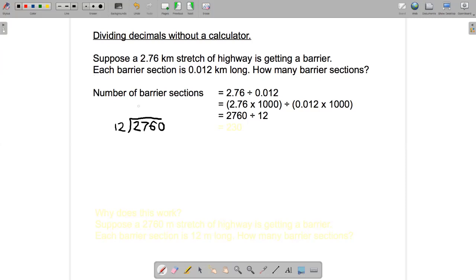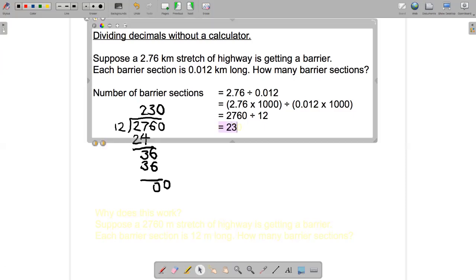So 12s into 27 goes two times. Two times 12 is 24. 27 minus 24 is 3. Bring down the 6. 12s into 36 goes three times. 12 times 3 is 36. Okay, so I've got no remainder now. So when I bring down the 0, 12s into 0 goes zero times. So there's my answer. 230 barrier sections is what we need.